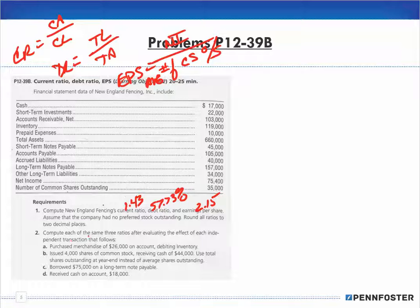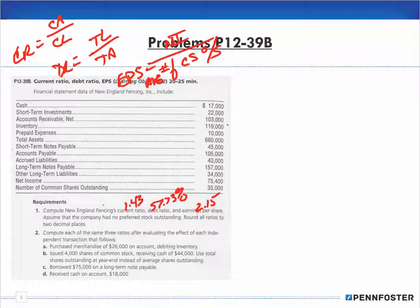Now it says to compute each of the same three ratios after evaluating the effect of each independent transaction. Transaction A: purchase merchandise of 26,000 on account, debiting inventory. So our inventory increases by 26,000 — from 119,000 to 145,000 — and accounts payable increases by 26,000. Total assets also increase by 26,000.